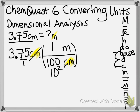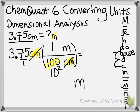Centimeters have canceled out, which means my answer is left in the units of meters, which is what I want. Because 100 is in the denominator, I divide by this number — which is why back in middle school your teacher told you to move the decimal place two places to the left. So our answer is 0.0375 meters.